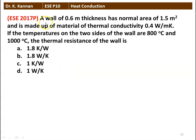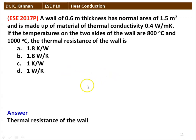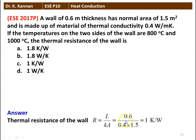Next question: A wall of 0.6 m thickness has a normal area of 1.5 m² and is made of material with thermal conductivity 0.4 W/m·K. If the temperatures on the two sides are 800°C and 1000°C, what is the thermal resistance of the wall? Options: 1.8 K/W, 1.8 W/K, 1 K/W, 1 W/K. Thermal resistance R = L / (K·A) = 0.6 / (0.4 × 1.5) = 1 K/W. The answer is 1 Kelvin per watt.